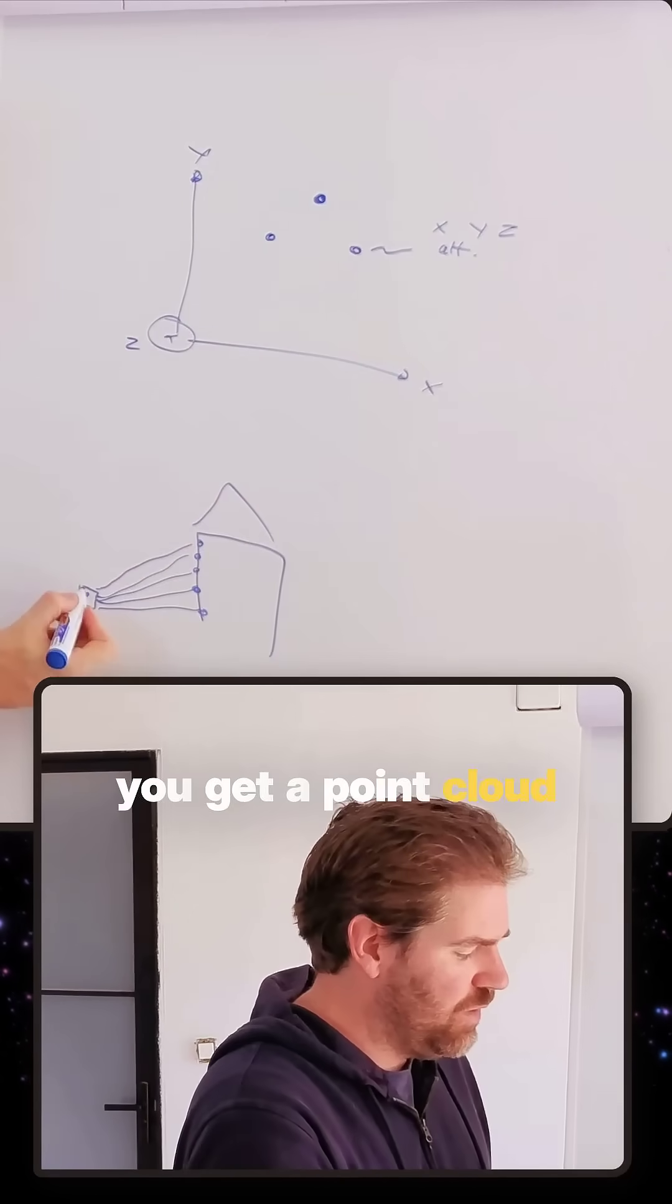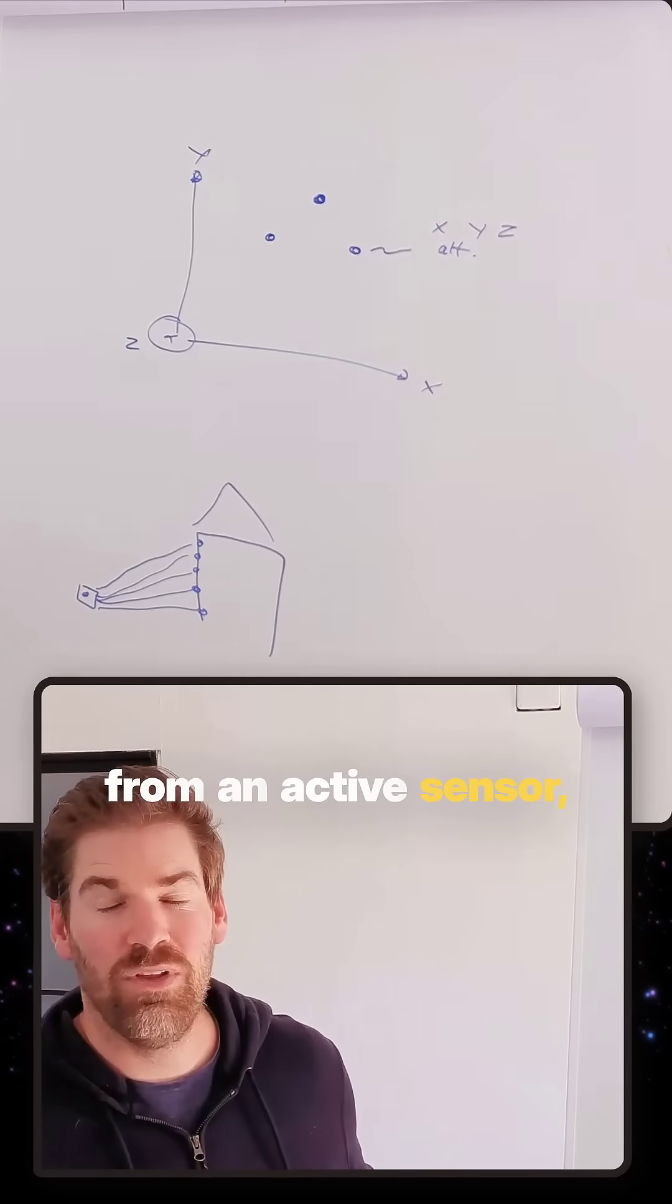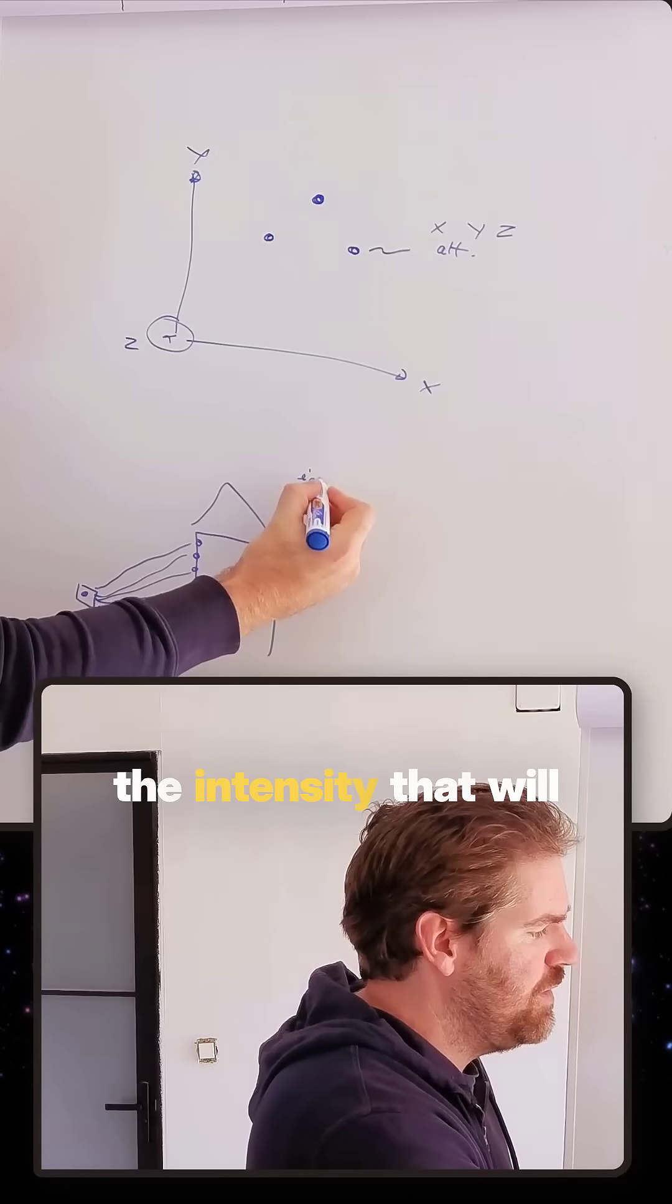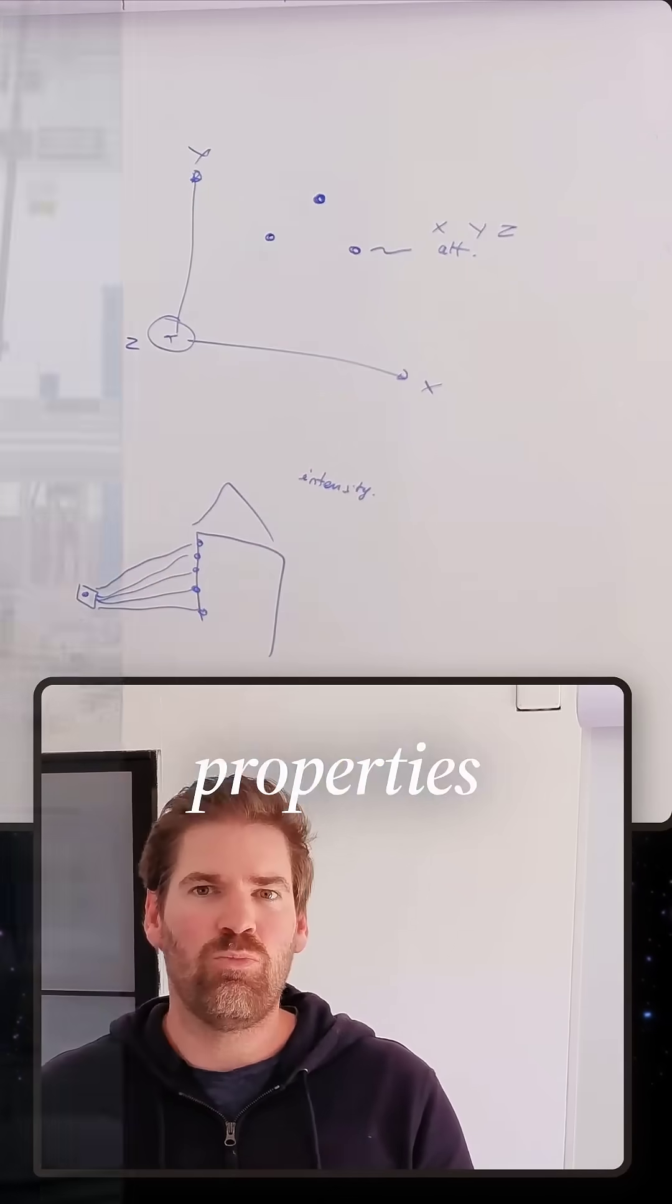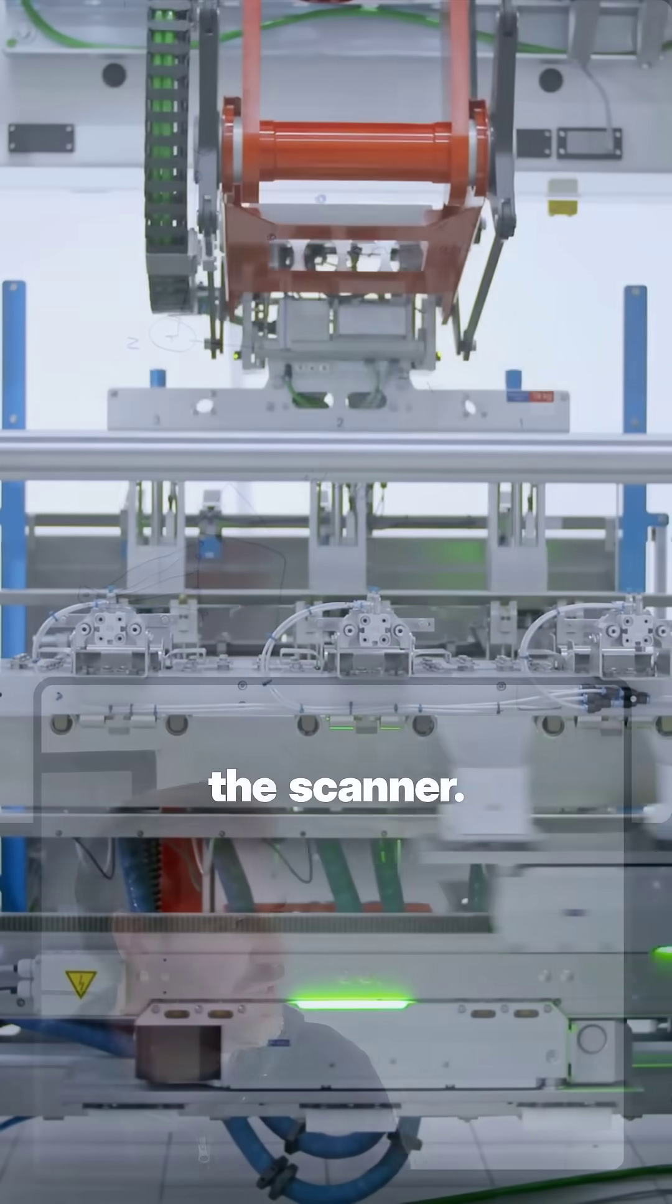With attributes, when you get a point cloud from an active sensor, usually you have at least the intensity that will reflect more or less the material properties and also the angle and the distance from the scanner.